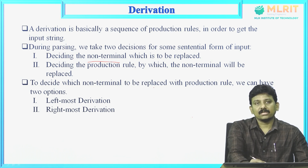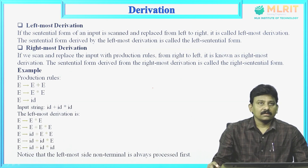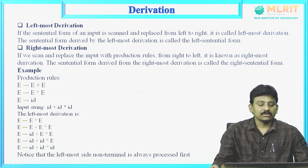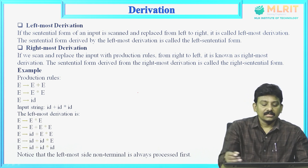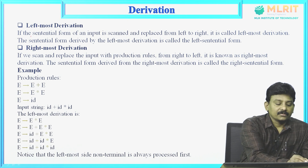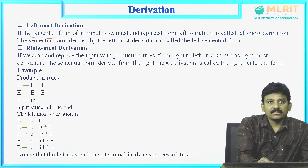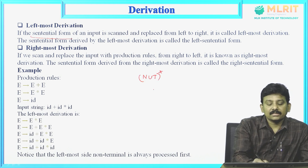If you replace the leftmost non-terminal in the sentential form, it is called leftmost derivation. If you replace the rightmost non-terminal, it is called rightmost derivation. In leftmost derivation, if the sentential form of an input is scanned and replaced from left to right, it is called leftmost derivation. Sentential form always contains a combination of terminals and non-terminals.